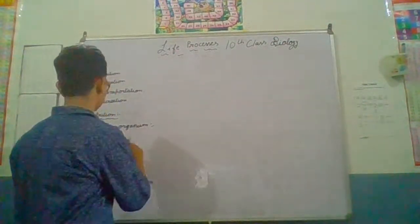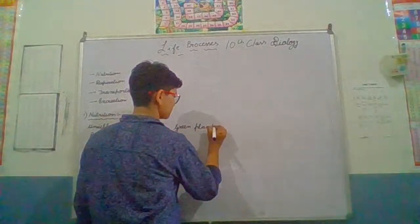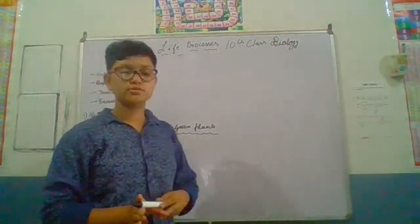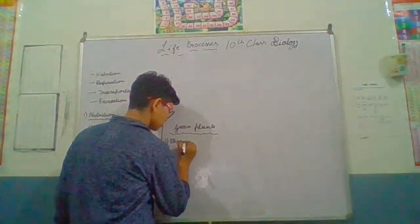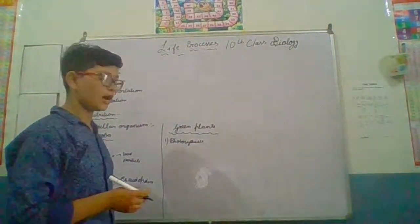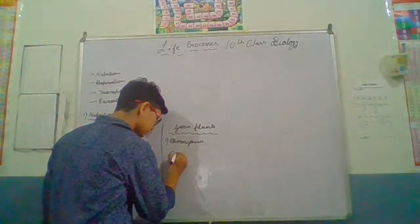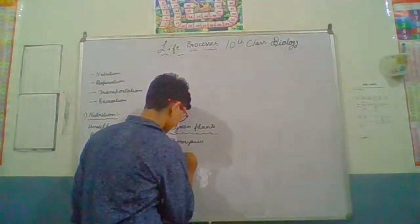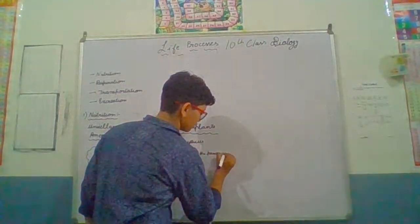Furthermore, we will discuss about nutrition in green plants. How do green plants obtain their nutrition? As we all know, green plants take their nutrition by the process called Photosynthesis. In this process of photosynthesis, there is a breakdown of energy. Green plants take carbon dioxide, and in the presence of chlorophyll they make glucose.